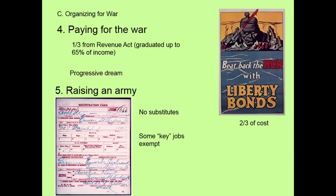The government does also raise taxes. Using the 16th Amendment, the Revenue Act creates a graduated income tax. The more money you make, the more you pay — up to a 65% top tax bracket rate. If you're one of the richest Americans at this time, you're paying a staggering 65% of your income. This is progressive: progressives had long wanted a graduated income tax to lower the wealth gap. Once again, World War I allows progressives to do things they've always wanted, but on a bigger scale.